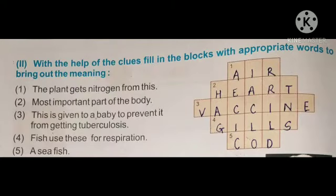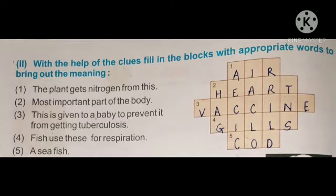Next: with the help of the clues, fill in the blocks with appropriate words to bring out the meaning. First: the plant gets nitrogen from this — the right clue is 'air'. Second: the most important part of the body is 'heart'. Third: this is given to a baby to prevent it from getting tuberculosis — it is known as 'vaccine'.